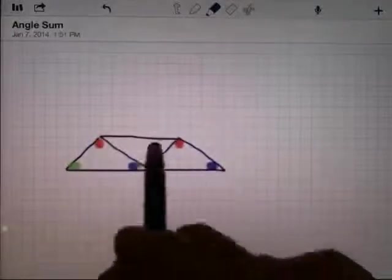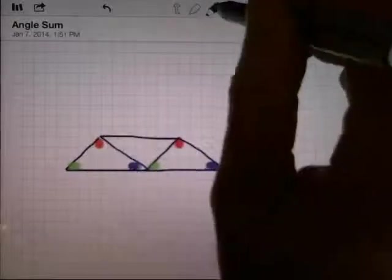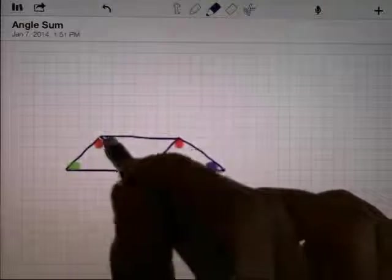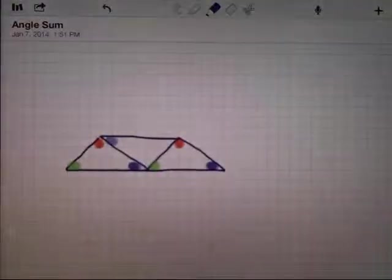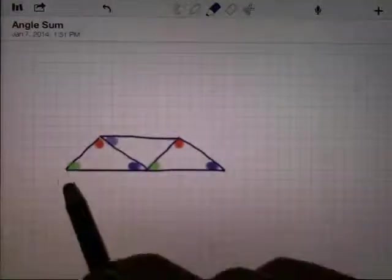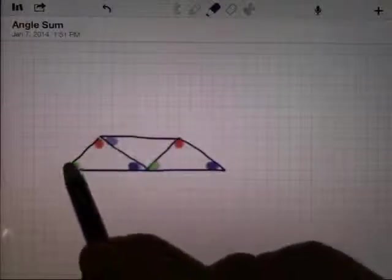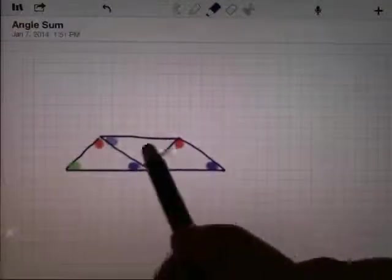So in a parallelogram, opposite angles are the same. So that blue angle is the same as this one right here. Likewise, in this parallelogram, this angle and that angle are opposite each other.